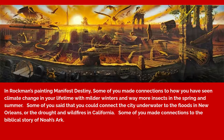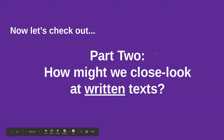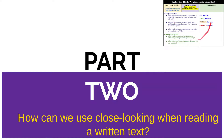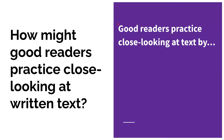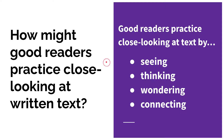Now let's check out how to use close looking with written texts using part two of your notebook time activity. If you scroll down, you'll see that part two is set up very similarly, where we're going to answer: how can we use close looking when reading a written text? Good readers practice close looking at a text by seeing, thinking, wondering, and connecting.